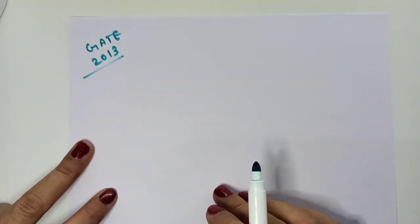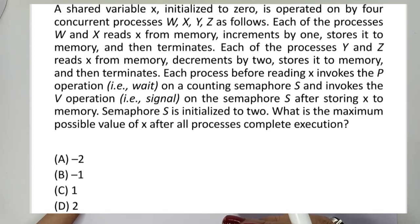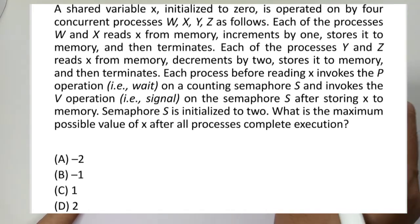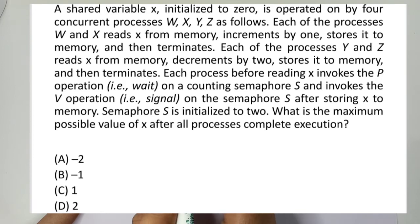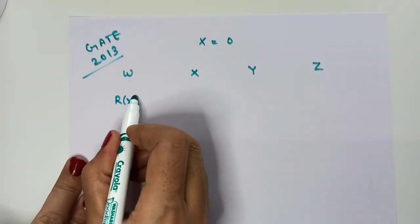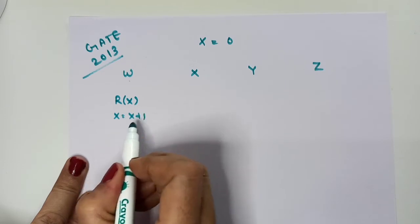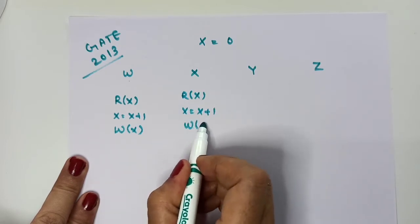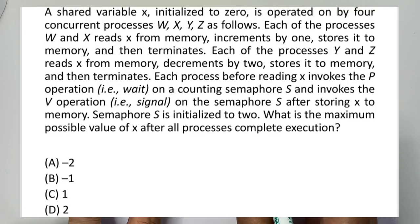The next question has been asked in GATE 2013. A shared variable x is initialized to 0 and is operated on by four concurrent processes W, X, Y, and Z. Each of the processes W and X reads x from memory, increments it by one, and stores it to memory, then terminates.